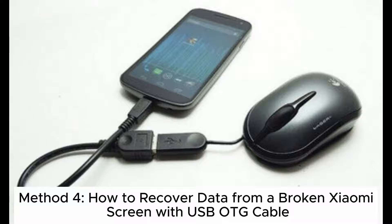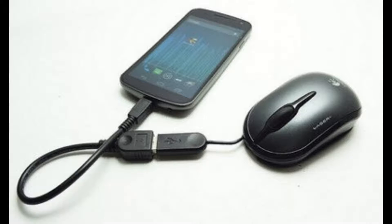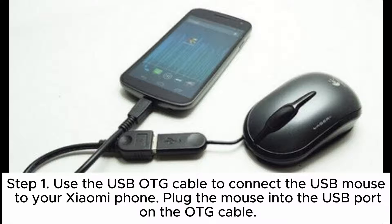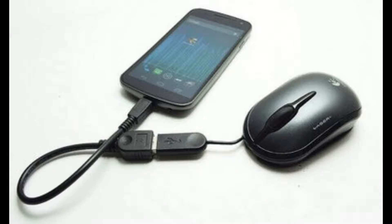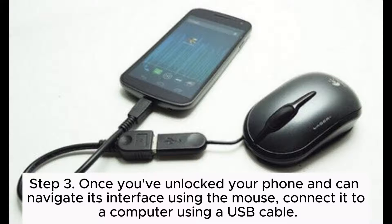Method 4: How to recover data from a broken Xiaomi screen with a USB OTG cable. Step 1: Use the USB OTG cable to connect a USB mouse to your Xiaomi phone — plug the mouse into the USB port on the OTG cable. Step 2: Once the mouse is connected, you should see a cursor on your phone's screen. Use the mouse to navigate through the phone's interface. Step 3: Once you've unlocked your phone and can navigate its interface using the mouse, connect it to a computer using a USB cable.